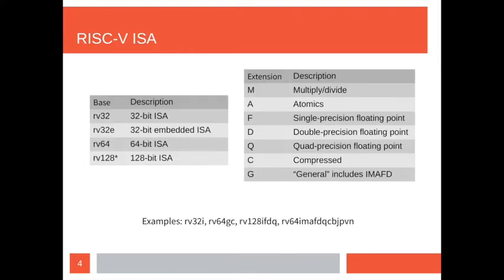The ISA is broken up into the base and extensions. You can have a 32-bit RISC-V core or a 64-bit one; the specification has made provisions for an eventual 128-bit core. On top of that you add extensions: for hardware floating point you add the F, D, or Q extensions; for atomics you implement the A extension. In that sense it's modular, and all of these are valid RISC-V implementations in the eyes of the spec.